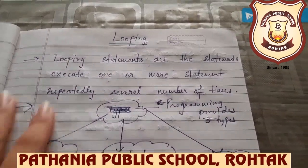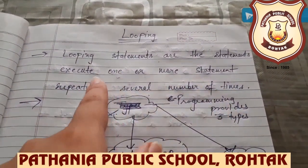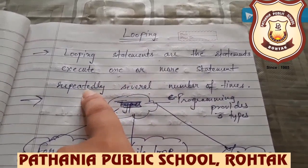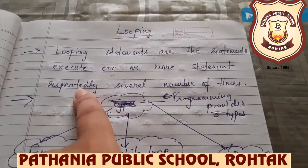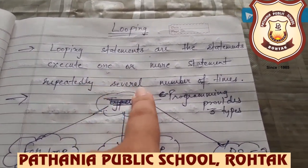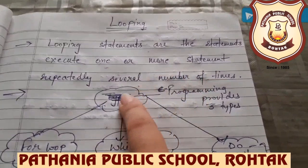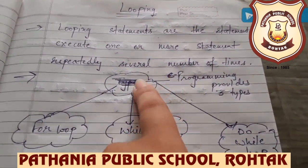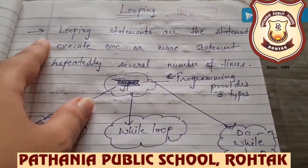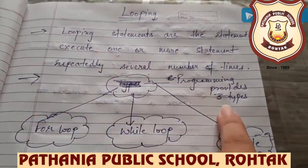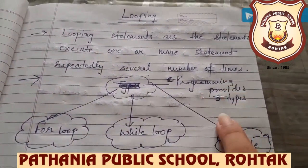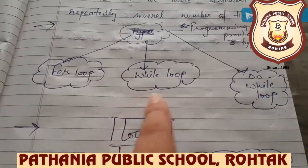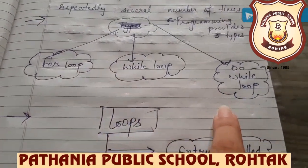Now the next one is looping. Looping statements are statements which execute one or more statements repeatedly, again and again, several number of times. Programming provides three types of looping: for loop, while loop, and do-while loop.